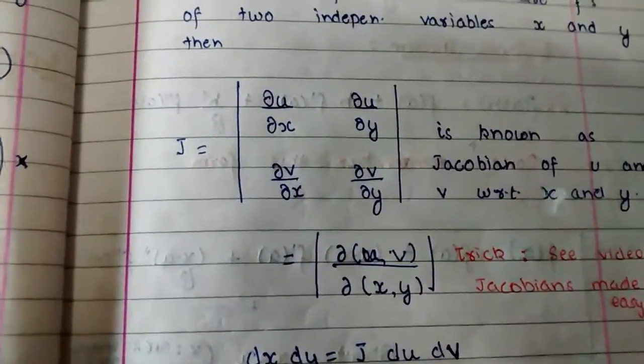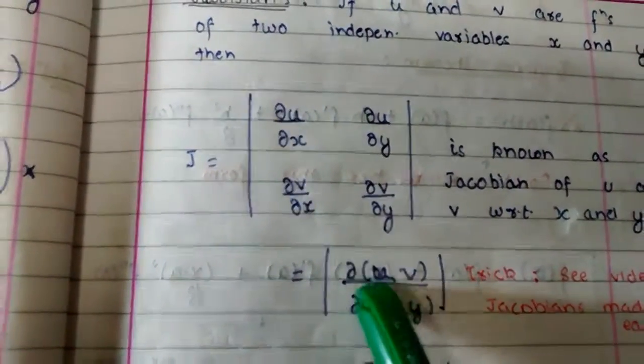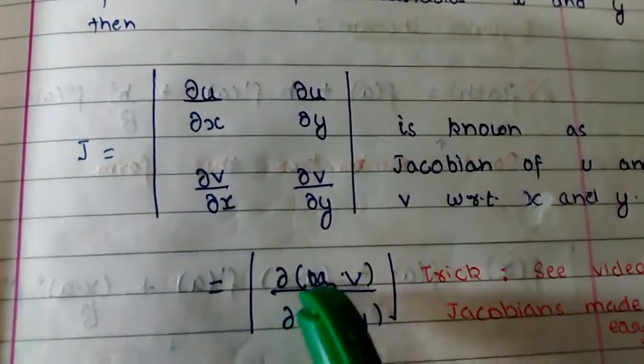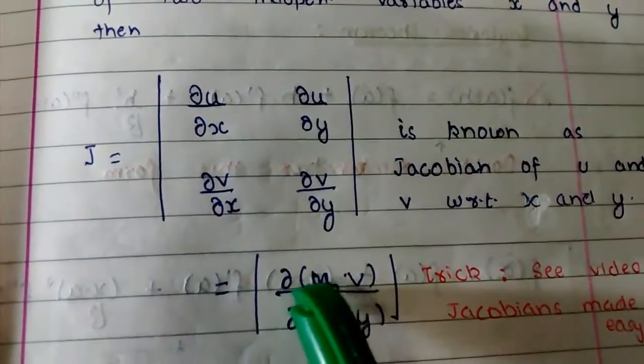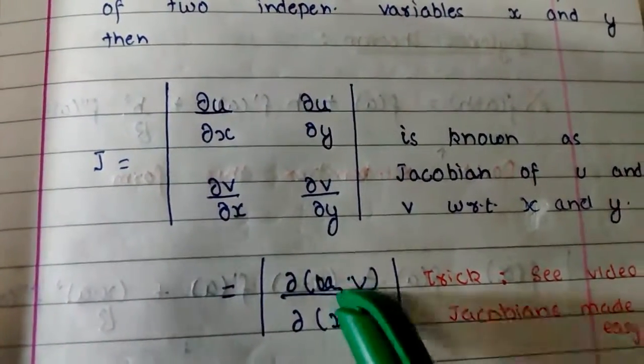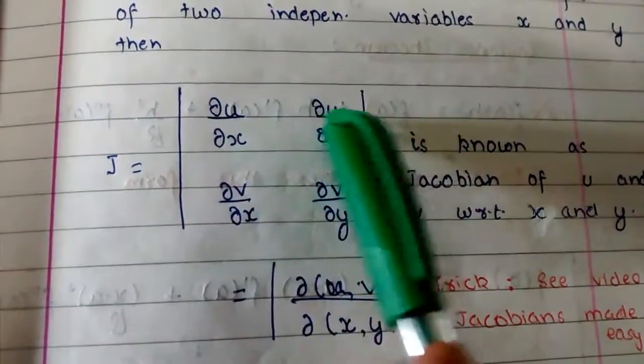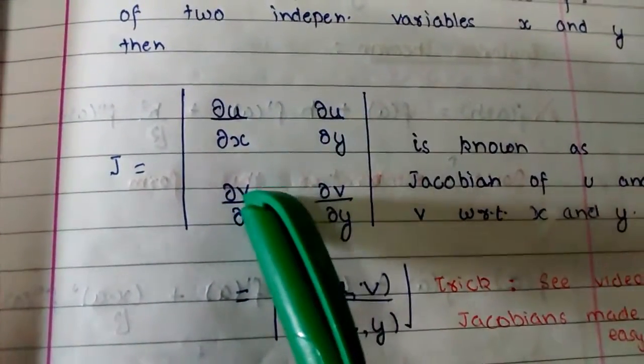So if some part like this one, del u comma v, if it is extending in row, then what does it mean? It means that u will be the same along the x direction, along the row.